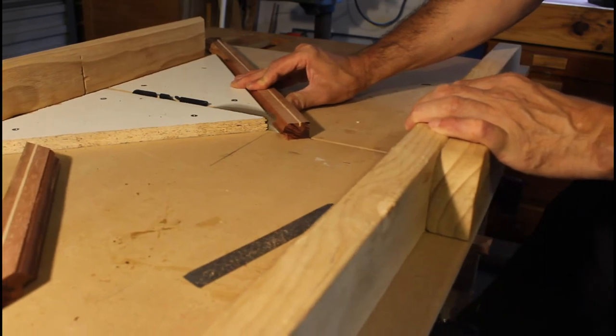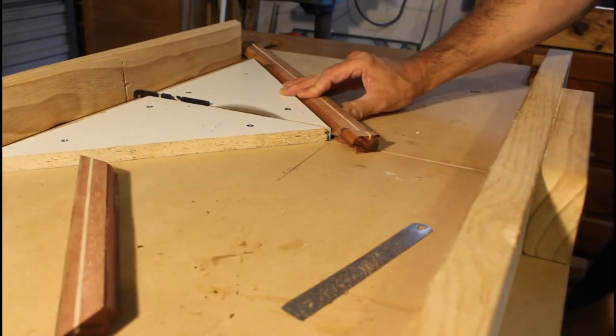Here I am making the miter cuts at the table saw with some inserts I have added to my crosscut sled.